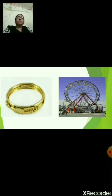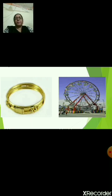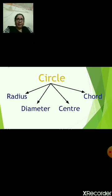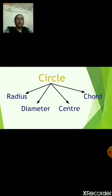Now, what is a circle? A circle is a round two-dimensional shape. There are different parts in a circle like radius, diameter, center, and chord. These are the different parts of a circle, and we are going to learn about each part.